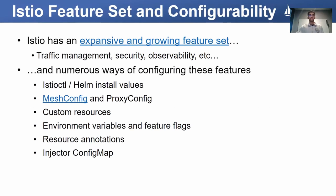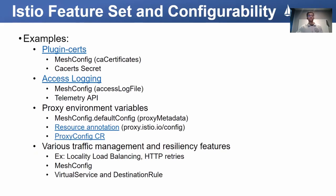As most of you are already aware, Istio has a lot of features — and not only are there so many features, but there are so many ways of configuring them. Take plug-in certs: I can pass this into the mesh config CA certificates field, or through populating the CA certs Kubernetes secret in the root namespace. Another case is setting environment variables for the proxy — we can do this through the mesh config, through resource-level annotations, or using the proxy config custom resource. These are just some of numerous examples of multiple ways of accomplishing a given task in Istio.